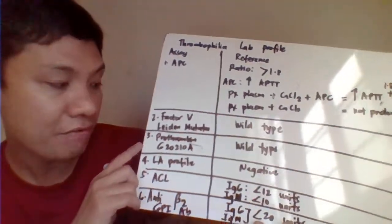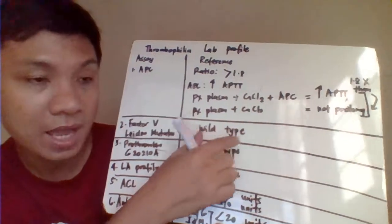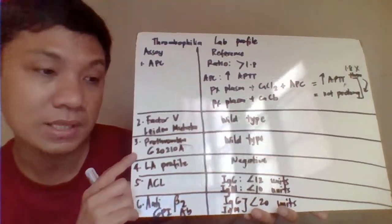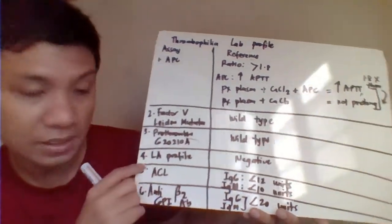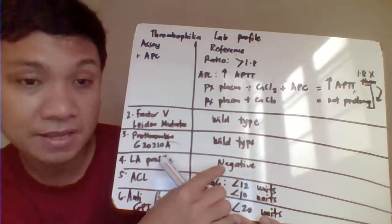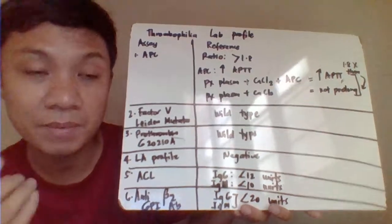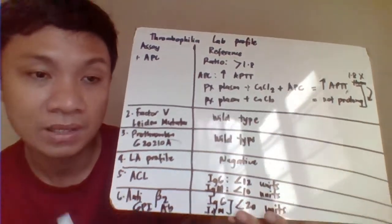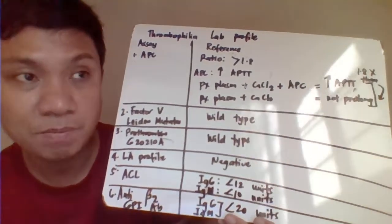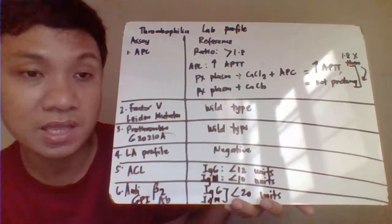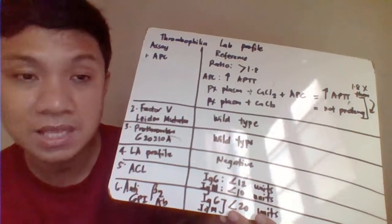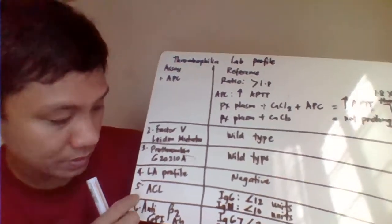Reference values for the thrombophilia profile: Factor V Leiden mutation and Prothrombin G20210A are reported as wild type (normal). For lupus anticoagulant profile, the normal result should be negative — a positive result in an SLE patient puts them at risk for thrombosis.